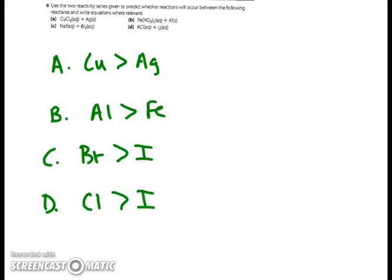In the first one, copper is already an ion and it's the more reactive one, so no reaction is going to happen since silver is not able to bump copper off. B: aluminum is more reactive than iron, and since Al is the one looking to react, yes, this will happen. On C, bromine is looking to react and it is the more reactive element, so yes, that will happen. But D, iodine is looking to react and it's the less reactive element, so no, D will not occur.